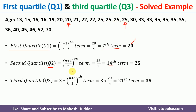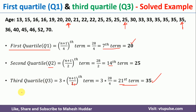Coming back to the third quartile, denoted Q3, which is equivalent to 3 times the (n+1)/4 term. That is 3 multiplied by 28 divided by 4, giving the 21st term. Counting to the 21st term in the data, that is nothing but 35. So this is how you calculate first quartile, second quartile, and third quartile.